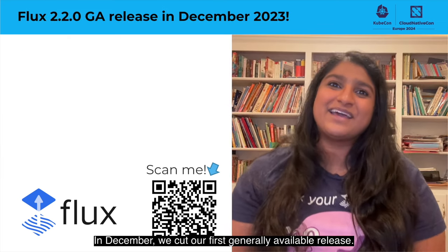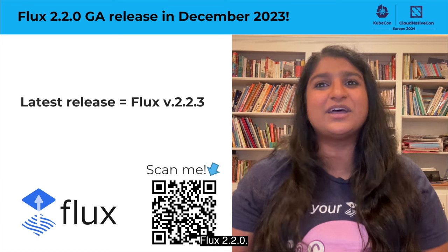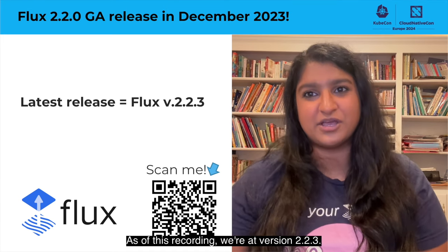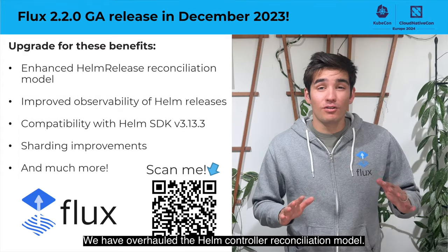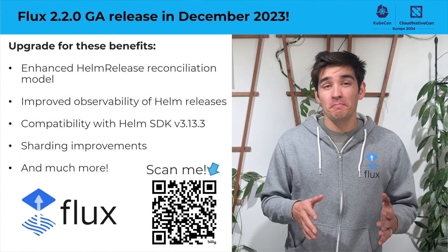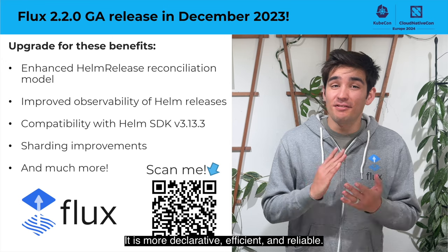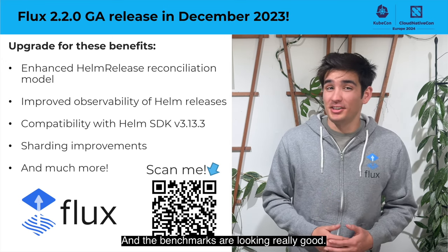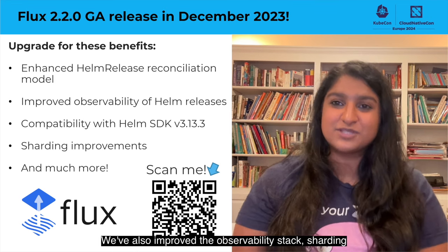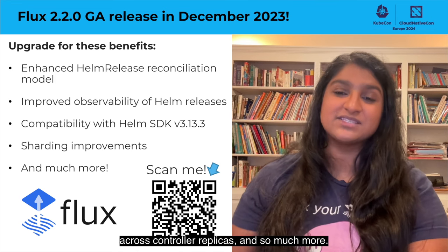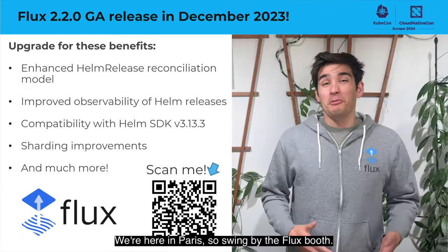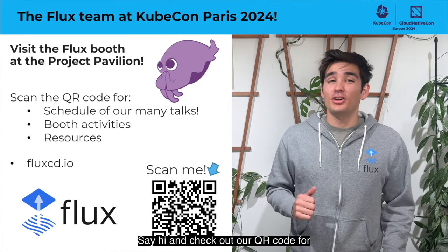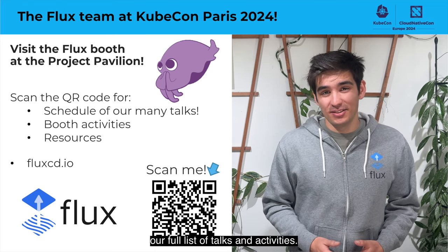In December, we cut our first generally available release, Flux 2.2.0. As of this recording, we're at version 2.2.3. We have overhauled the Helm controller reconciliation model — it is more declarative, efficient, and reliable, and the benchmarks are looking really good. We've also improved the observability stack, sharding across controller replicas, and so much more. We're here in Paris, so swing by the Flux booth, say hi, and check out our QR code for our full list of talks and activities.